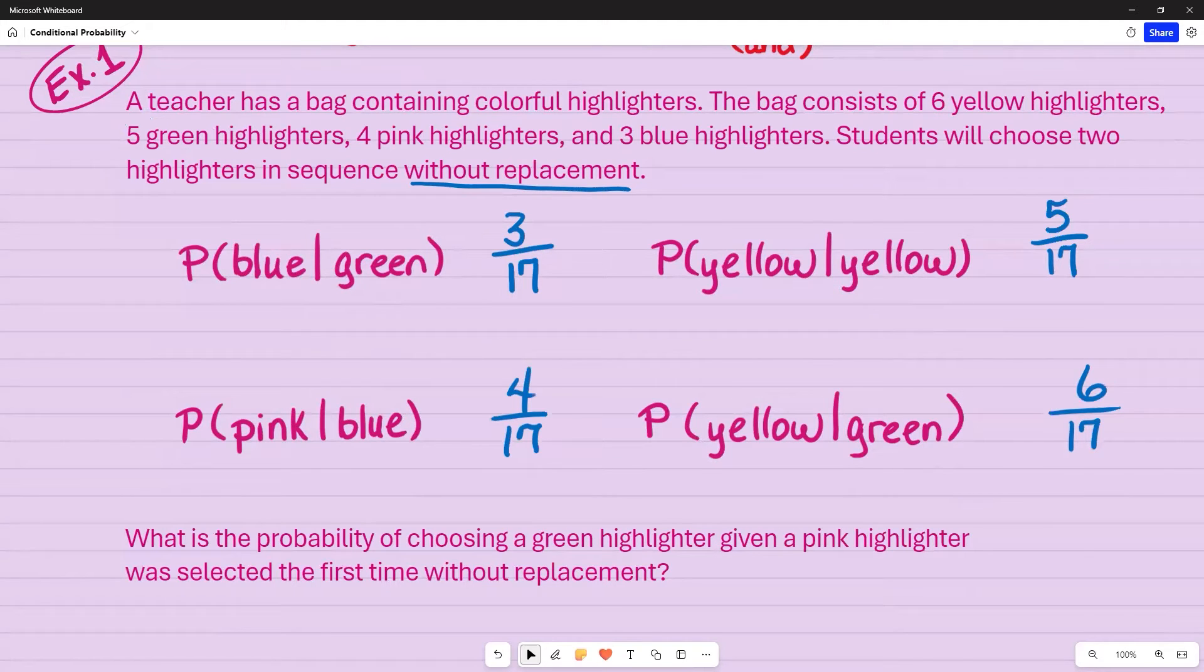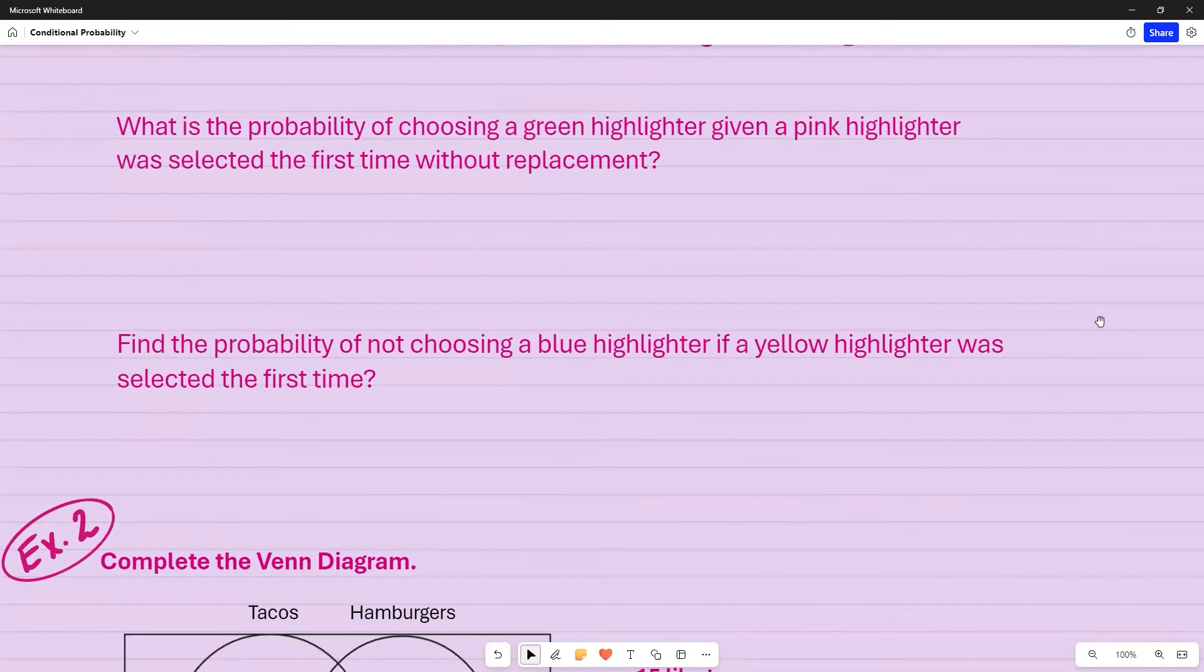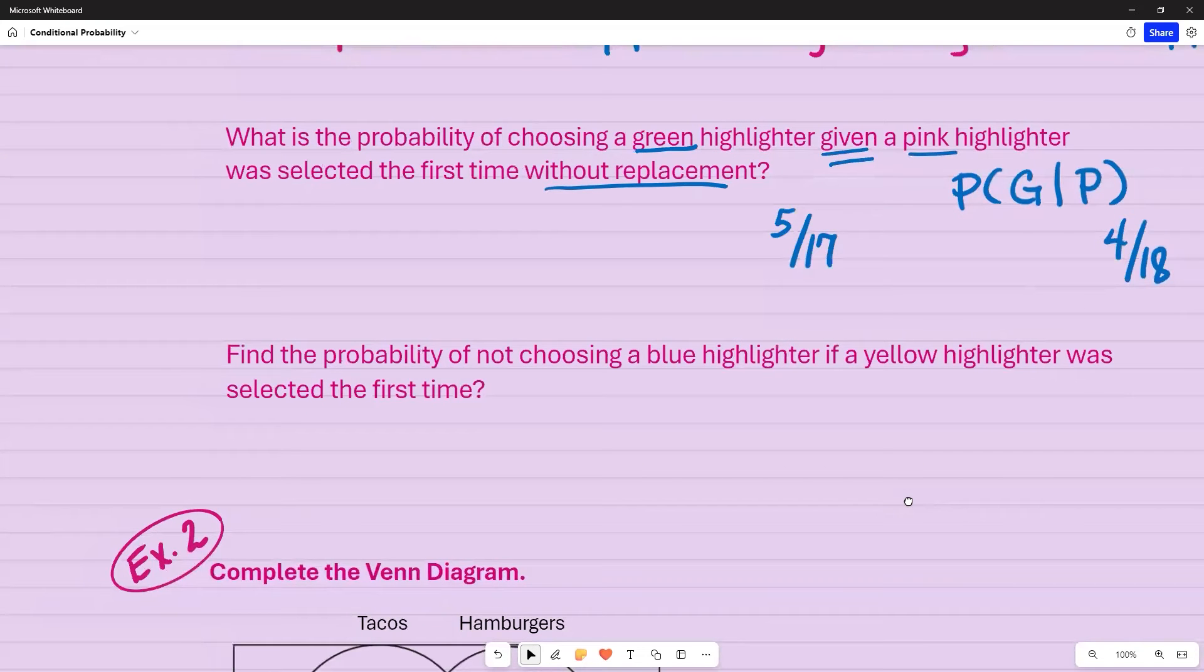Now, let's say that you have the same probability, but this time it's not using notation, it's using words. So what is the probability of choosing a green highlighter, given, this is a key word, that a pink highlighter was selected the first time, again, without replacement. So the way that I'm going to write this in notation form is the probability of selecting a green, given that I've already selected a pink. I have four pink out of that 18. How many greens can I possibly get if I've already taken a pink out? If I took one pink out, I no longer have 18, I have 17. But in terms of green, I have five green. So that's my answer, five out of 17.